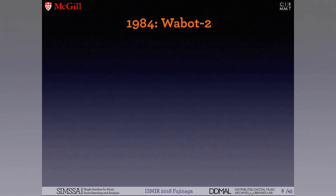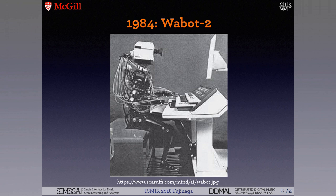In 1984 in Japan they built this robot — a real-time accompanist. There was a demo where a human singer would sing and this robot would read the music via a camera and play along. The robot is actually still in Japan at Tsukuba University — it doesn't move anymore but it's still there. It was called WABOT because it was built at Waseda University, which has a very impressive engineering department. There were about 50 people involved in building it, which is remarkable for over 30 years ago.